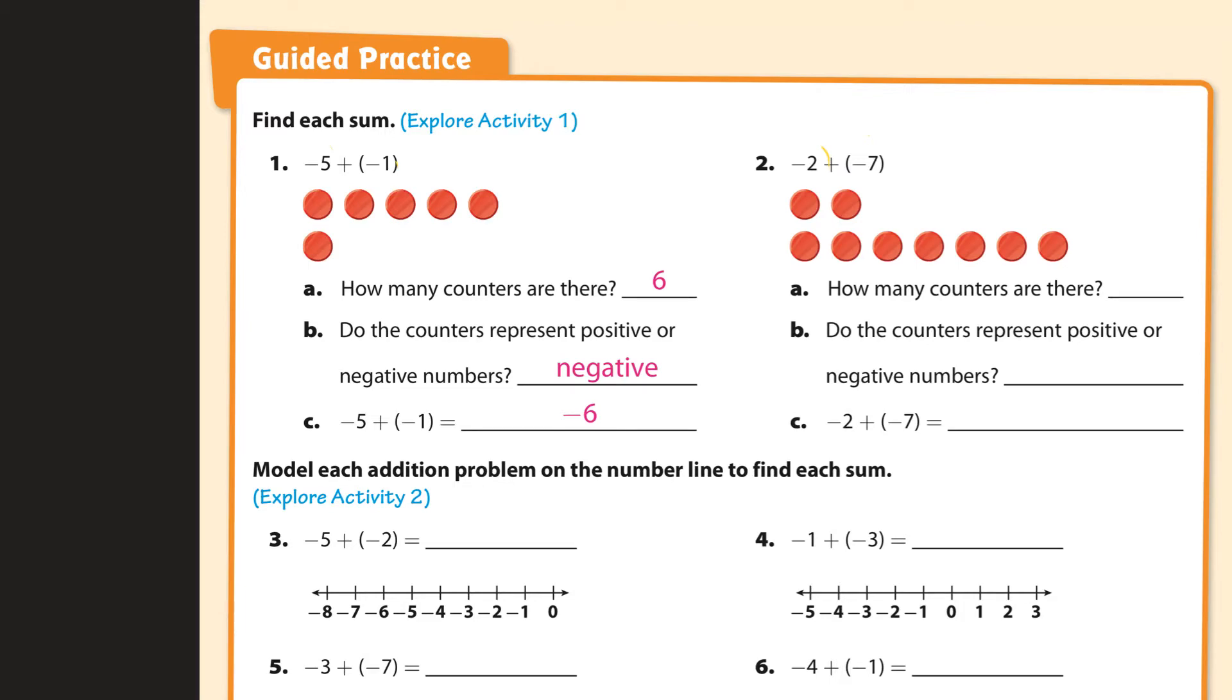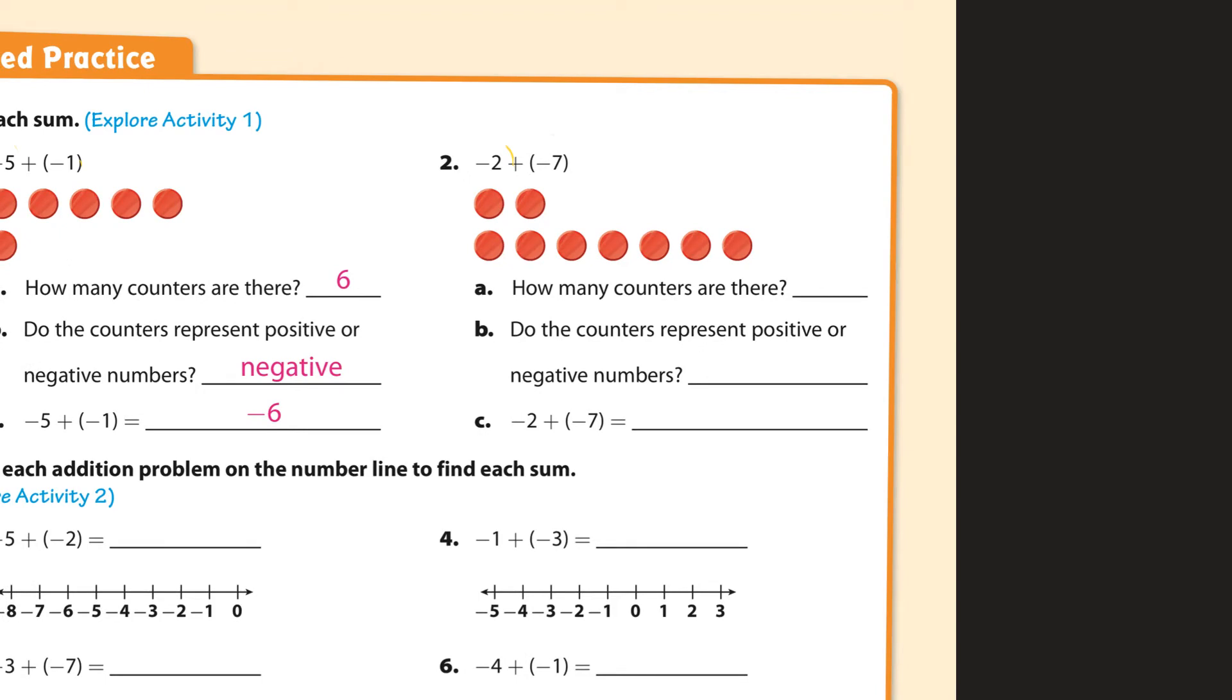And we move on to here. We have two negatives right here, negative 2, and seven negatives. How many counters are there? Well, I believe there are nine altogether. And do they represent positive or negative? Well, they're all negative. And so when you put that together, negative and 9, you get negative 9 for your answer. So two negatives and seven negatives give you a sum of nine negatives.